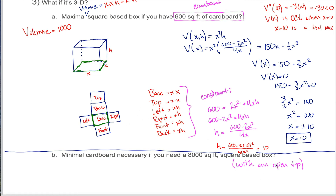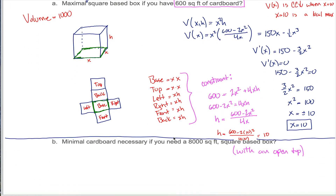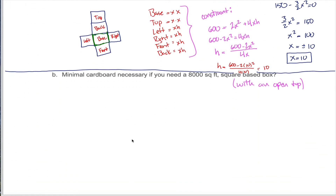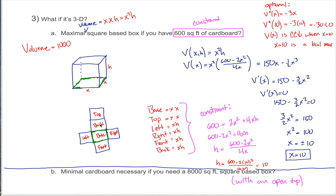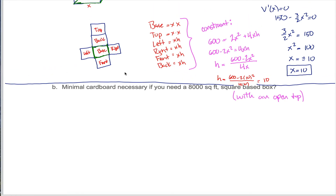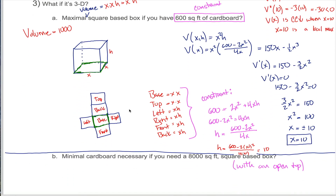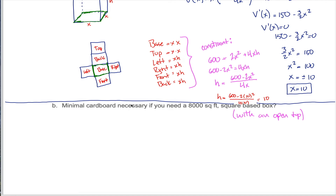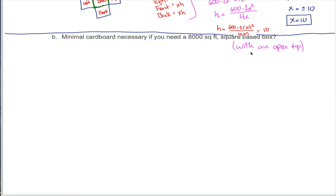This box has an open top, so there is no top — we're not using up any cardboard for the top. It's a bit tricky to figure out what the function is and what the constraint is here, because they're switched around. In the example we just did, we were looking for the maximal volume. In this example, we want the minimal cardboard necessary. In the last one, the cardboard was the constraint and volume was the function. In this one, the cardboard is the function and the volume is the constraint.